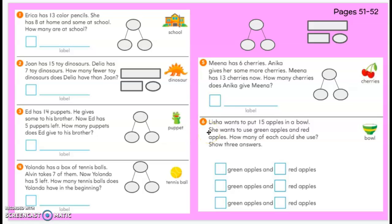Lisha wants to put 15 apples in a bowl. She wants to use green apples and red apples. How many of each could she use? Show three answers. So 15 apples in a bowl. Some of them are green and some red.